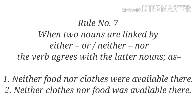Rule number seven: when two nouns are linked by 'either...or' or 'neither...nor', the verb agrees with the later noun. Example one: 'Neither food nor clothes were available there.' Here 'food' is mentioned first and 'clothes' later — clothes is plural, so the verb is plural: 'were'. Example two: 'Neither clothes nor food was available there.' Here the later noun 'food' is singular, so the singular verb 'was' is used.